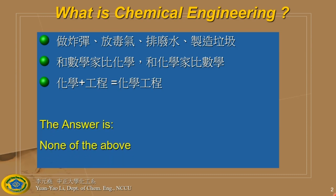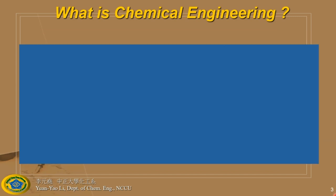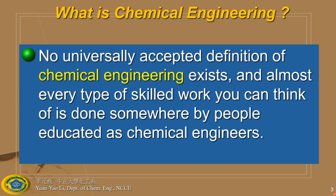There's no exact answer to this question — the answer is none of the above. Why? Because there is no universally accepted definition of chemical engineering, and almost every type of skilled work you can think of is done somewhere by people educated as chemical engineers. I'll explain what that means shortly.